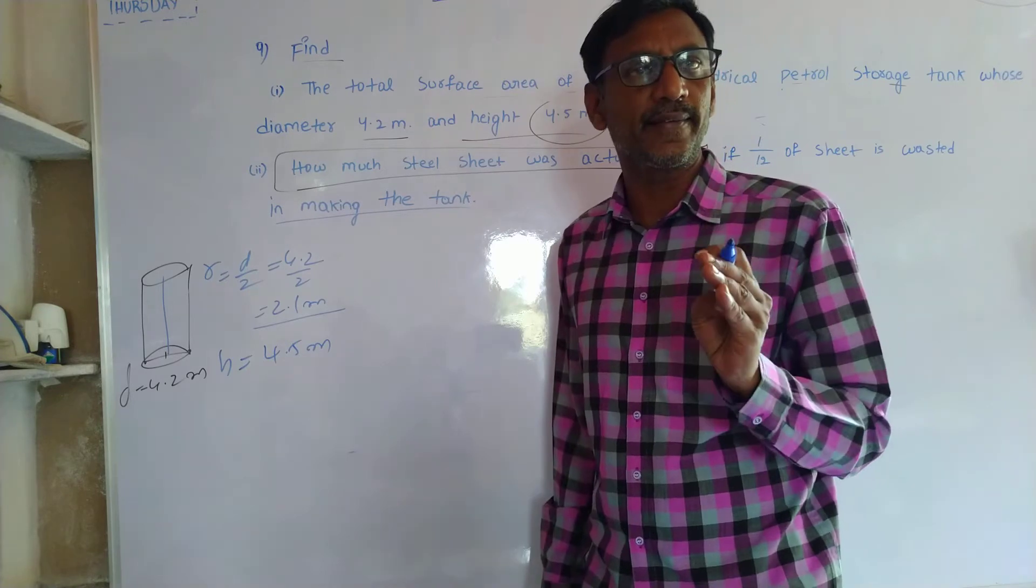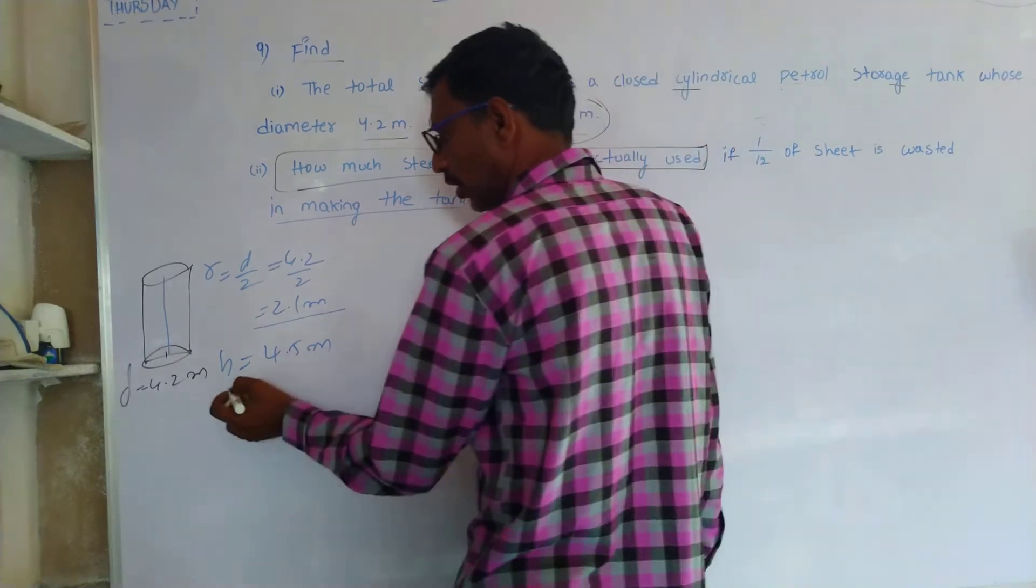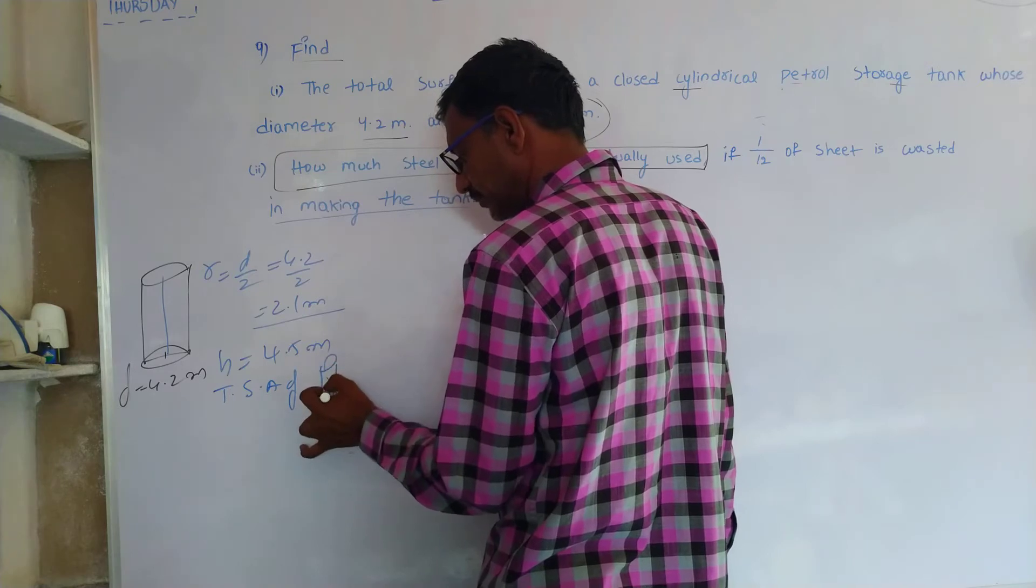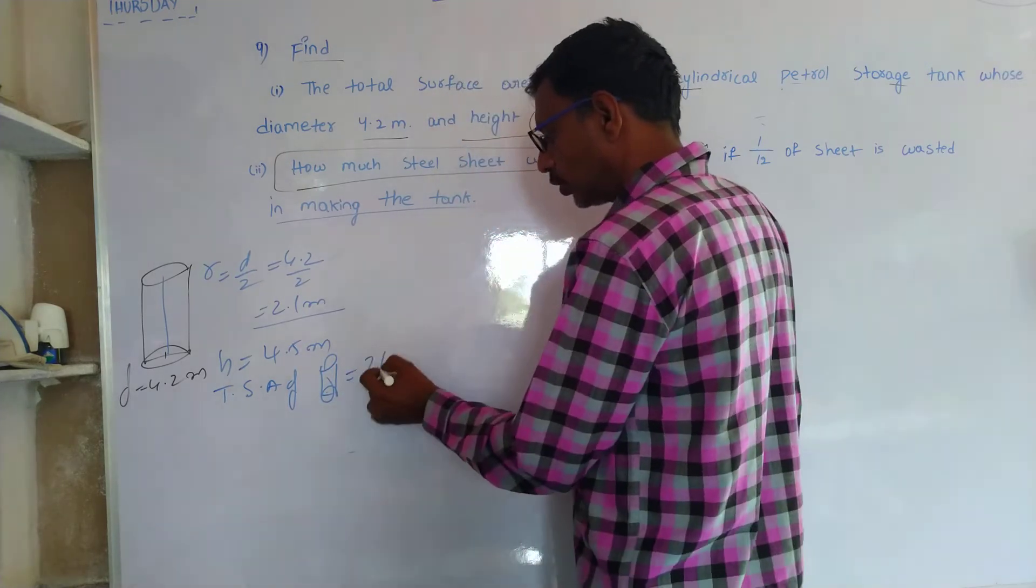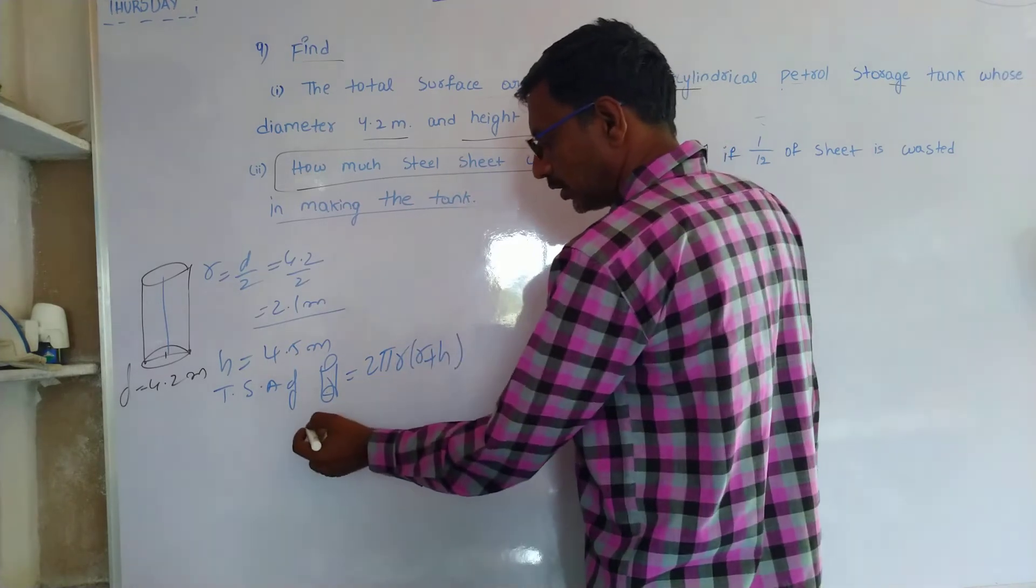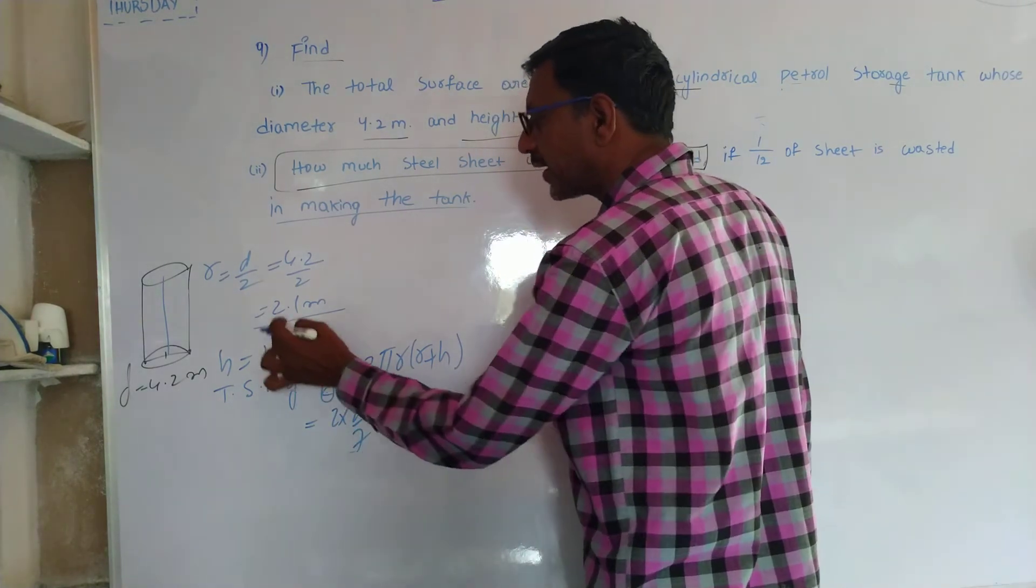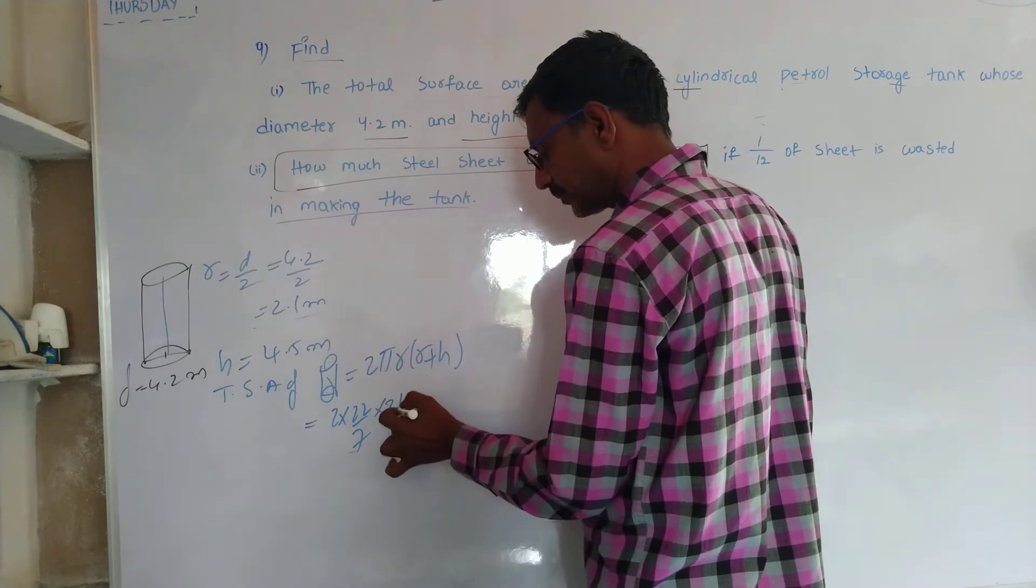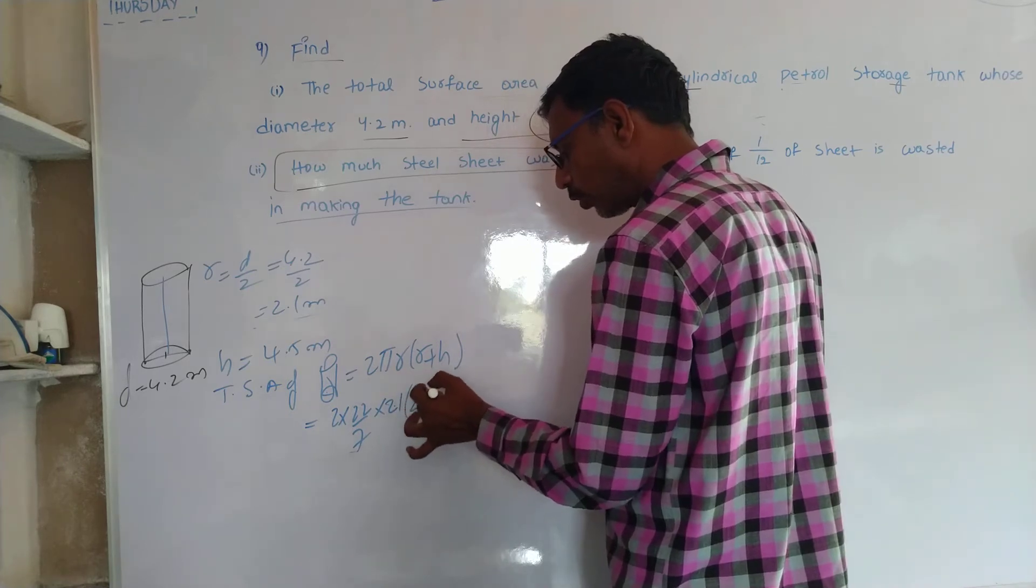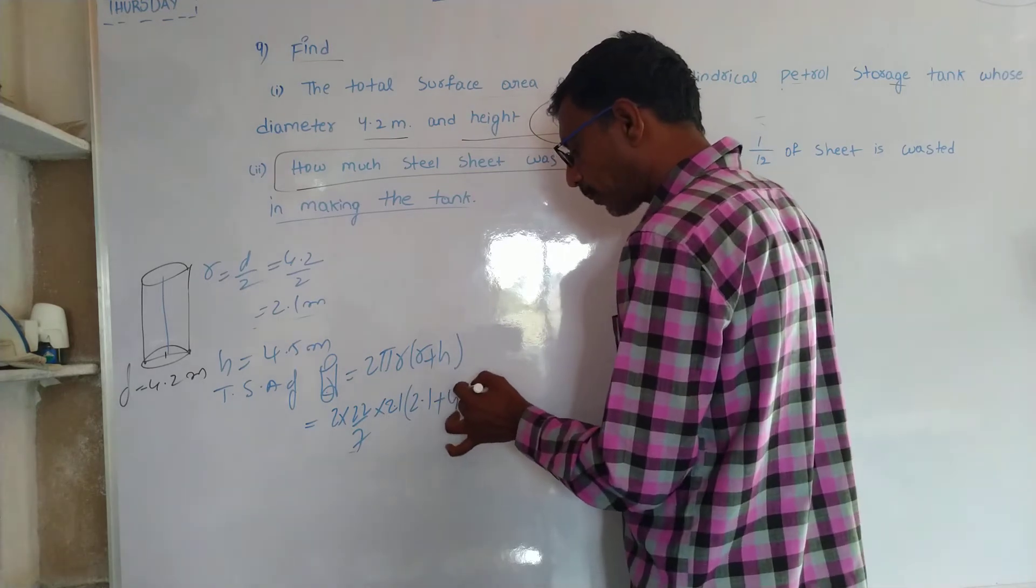Total surface area of cylinder is equal to 2πR into R plus H. 2 into 22 by 7 into my radius is 2.1 meters, 2.1 meters into 2.1 meters plus 4.5.